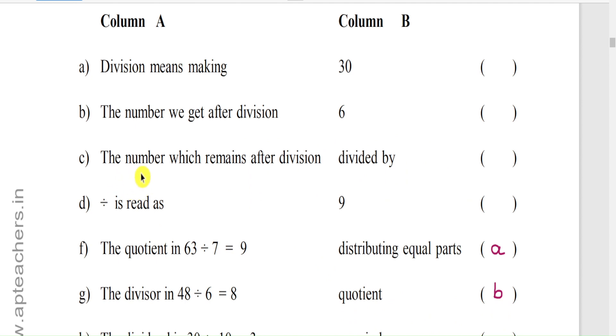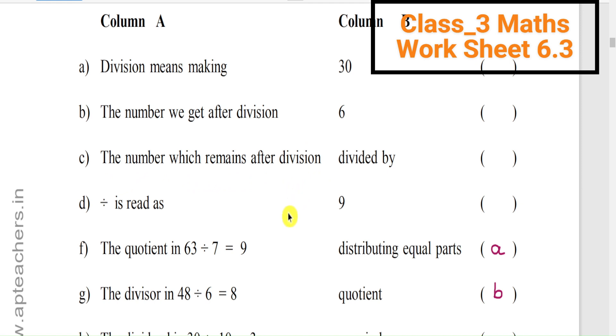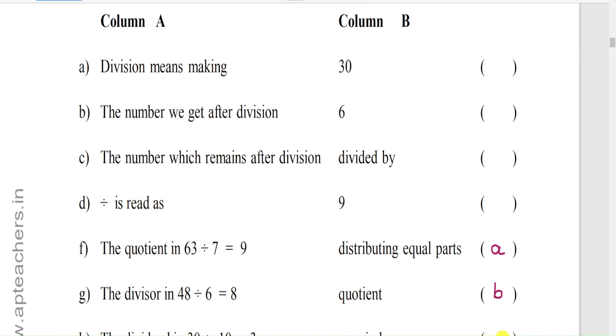Again, C: The number which remains after division. After division, that is the remainder.